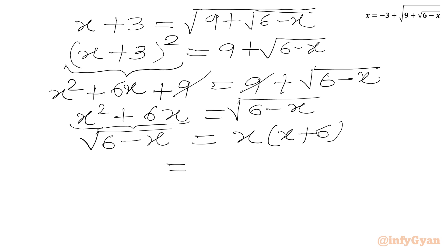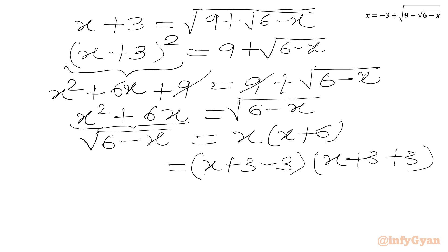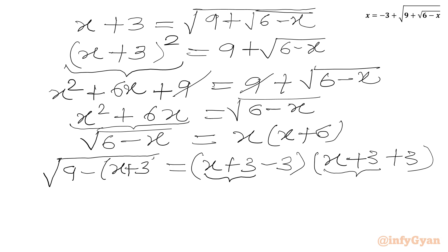Now we use an algebraic manipulation step. We rewrite x as (x plus 3) minus 3, and (x plus 6) as (x plus 3) plus 3. So the right-hand side becomes (x plus 3) minus 3, times (x plus 3) plus 3. We also rewrite the LHS radicand in terms of x plus 3: 6 minus x becomes 9 minus (x plus 3).